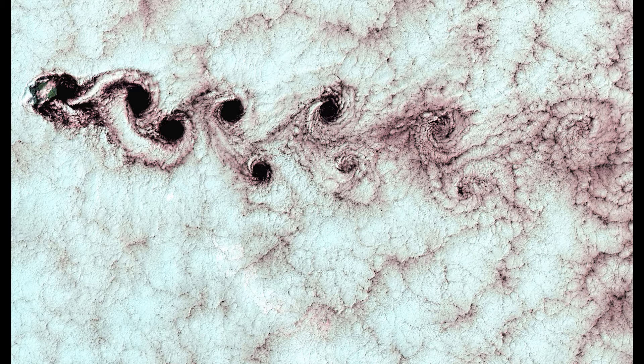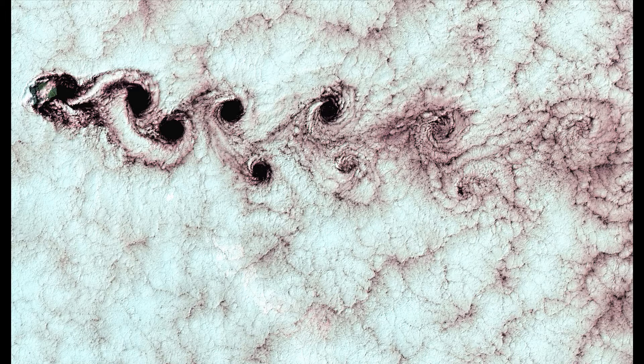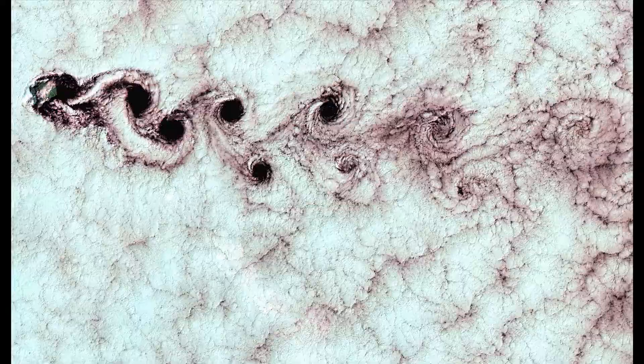Examples of von Kármán vortex streets include streets of clouds downstream of tall islands, with this photograph illustrating one such example. The photograph was taken in 1999 with the wind flow from left to right. The volcanic island rises nearly 1,300 meters above sea level, inducing a strong disturbance of the wind flow.